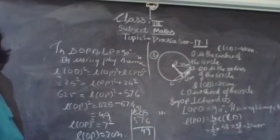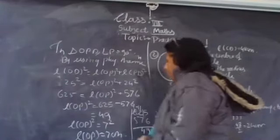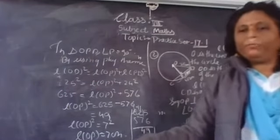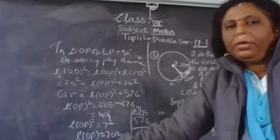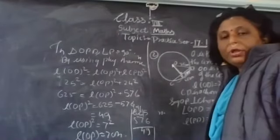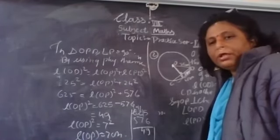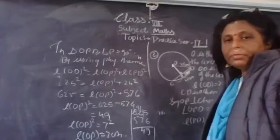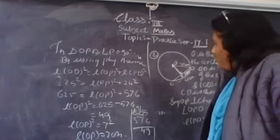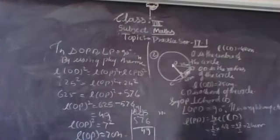So all of you must have got it. Question number 2 is completed. Question number 1 and 2 we have completed here. In question number 2 we used the Pythagorean theorem — that is, in a right angle triangle, the hypotenuse square is equal to the sum of the squares of the other two sides. In the next video we will complete question number 3 and 4. Bye, take out your screenshot.